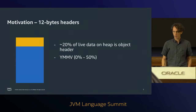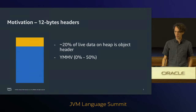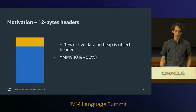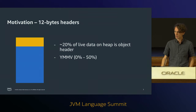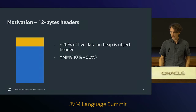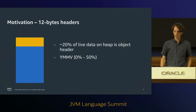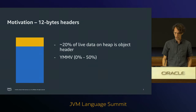Another way to look at this: if this is the live data on your heap, the blue parts are the actual information - the payloads - and the yellow parts are the metadata in the object headers. When we started the project, we examined a lot of different workloads and found that on average about 20% of live data on the heap is actual object headers. Your mileage may vary - workloads with lots of tiny objects have much more header information.